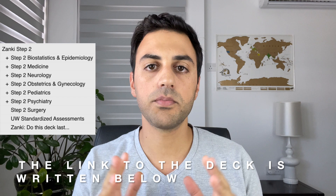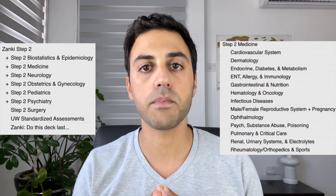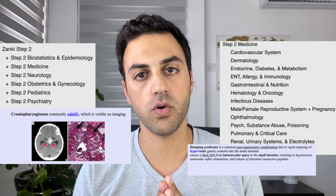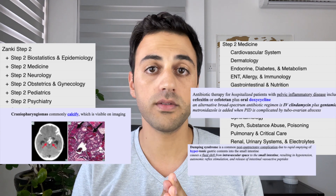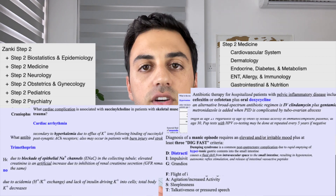The deck I used with Anki was the Zanki Step 2, which covers all Step 2 topics — biostats, meds, neuro, OBG, peds, psych, and surgery — except the social sciences. The flashcards in this deck are sorted by topic and are mostly from UWorld, and contain pictures, tables, and detailed explanations.